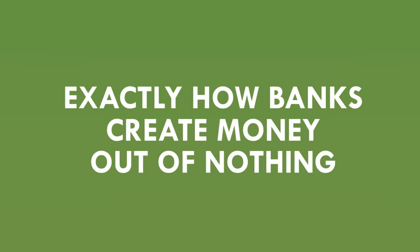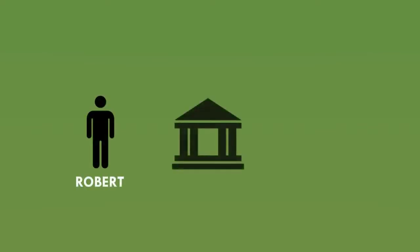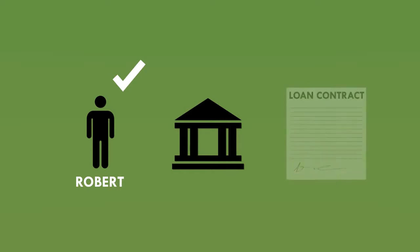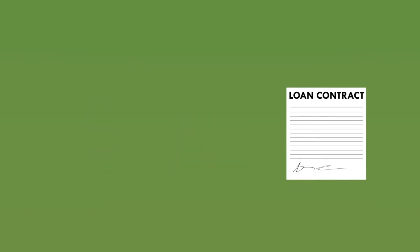Back to the numbers in your bank account — these are all created by banks, and the vast majority were created when somebody took out a loan. A customer called Robert walks into a Barclays bank and asks to borrow £10,000 for home improvements. Barclays runs an automated credit check and decides he can be relied on to repay. Robert signs a loan contract promising to repay £10,000 plus interest over the next four years. This contract is a legal asset considered worth £10,000 to the bank, so Barclays records it on its balance sheet.